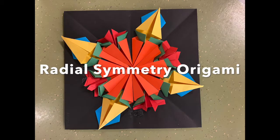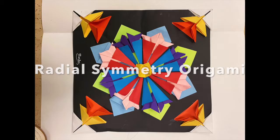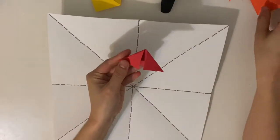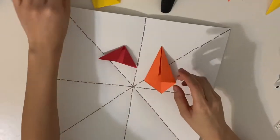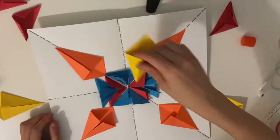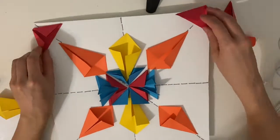Hey artists! Today we're working on our Radial Symmetry Origami Sculptures. We're going to review those three different types of folds we learned, and then we will start assembling our sculptures.